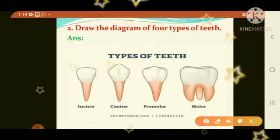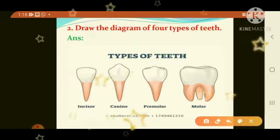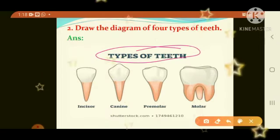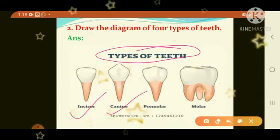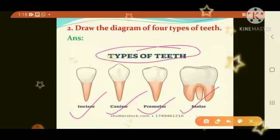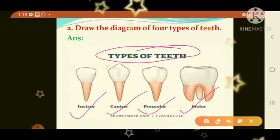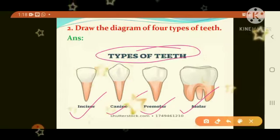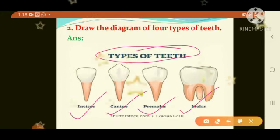Question number 2: draw the diagram of four types of teeth. There are four types of teeth. First: incisors. Second: canines. Third: premolars. Fourth: molars. See the picture — I will show you how to draw each type of tooth. Draw all four types of teeth in your science classwork.